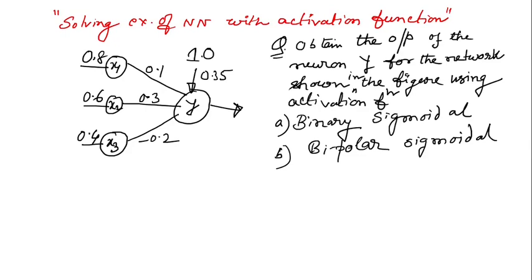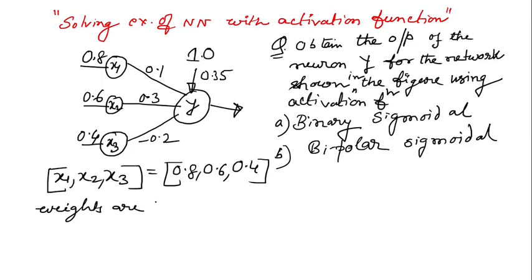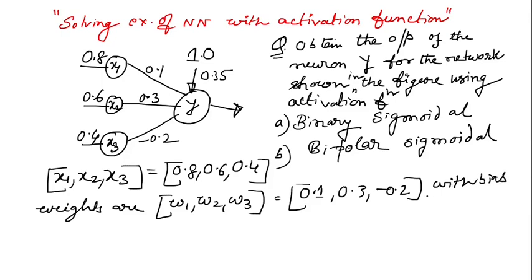let us have bipolar sigmoidal function. So this is a simple neuron network with three input neurons with bias and with one bias and one output neuron. And this forms a single layer network. And the inputs are given as X1, X2, X3 and the weights are, and B is equal to 0.35.